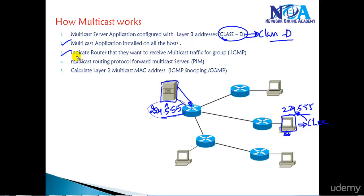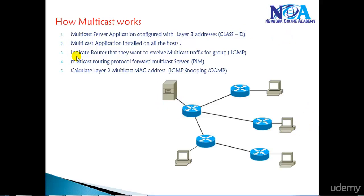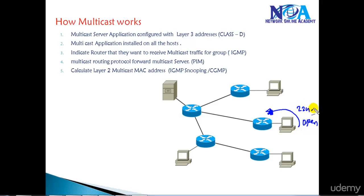The next step is the host needs to indicate to the local router that it wants to receive the multicast traffic for this group. Whenever this user clicks on the link — maybe accessing some online video or opening that particular application — it's going to send a request to the nearest hop router, requesting to receive the multicast traffic for this group, which might be 224.x.x.x or whatever the address is.